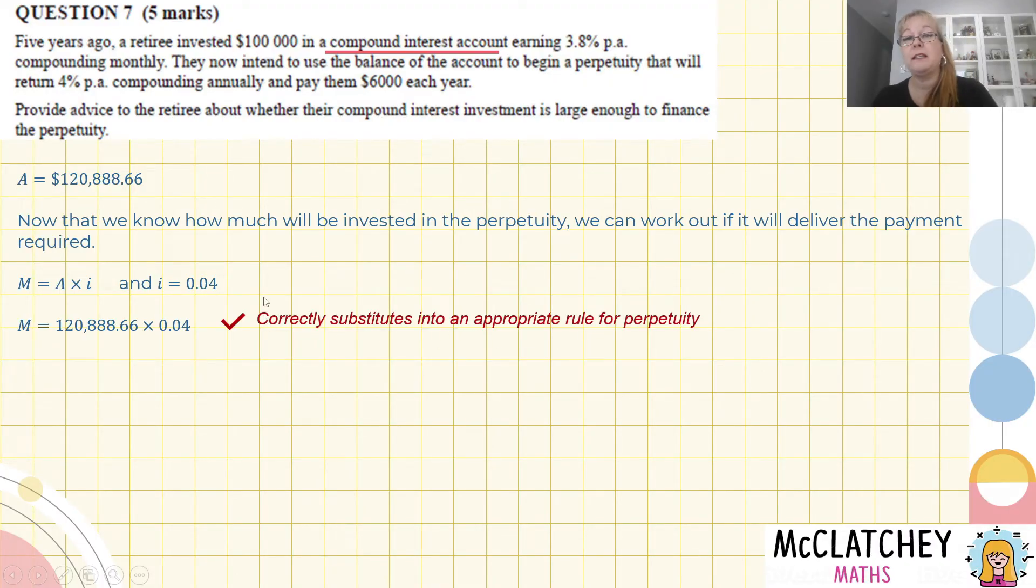So this correct substitution into an appropriate rule, which is one that we had to memorize after 2025, you won't have to memorize that anymore. So that's wonderful news for the future people. We get our first mark there and we work out that the payment is actually going to be $4,835.55, which is not what they're hoping it's going to pay them. They're hoping for much more than that.